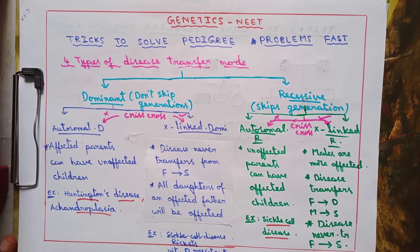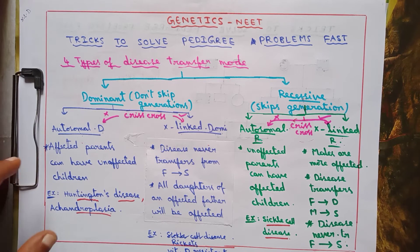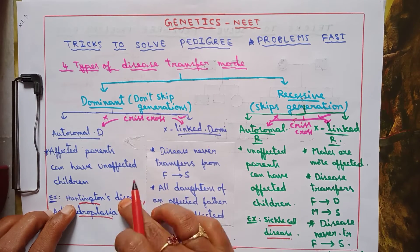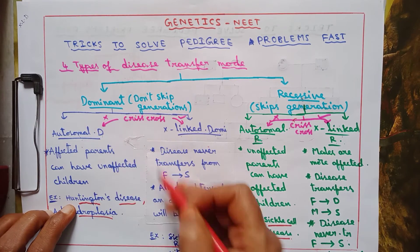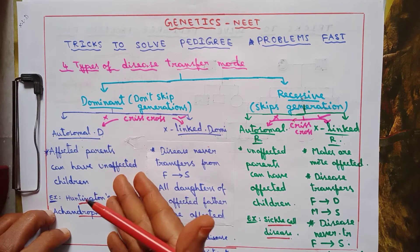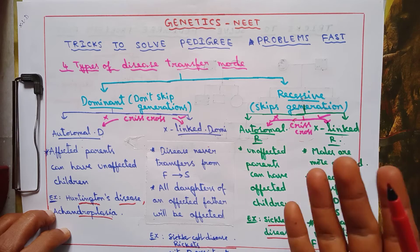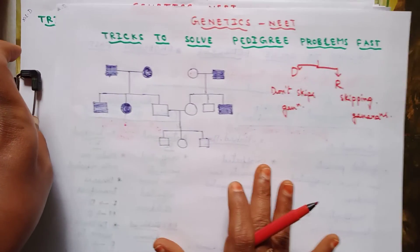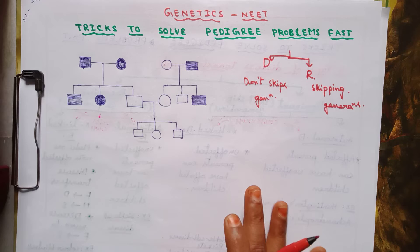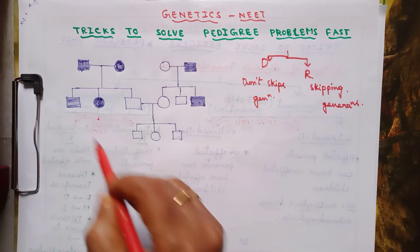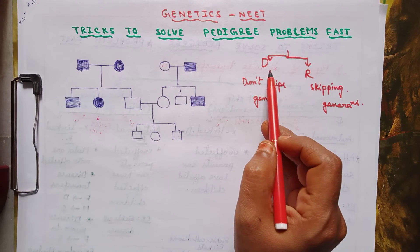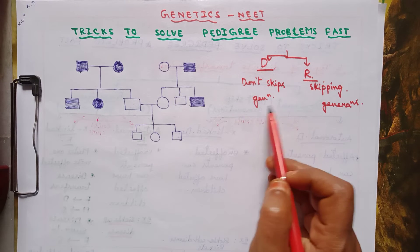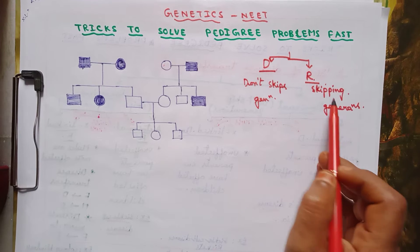Now let's apply these tricks to solve four different pedigree charts — one example for each type: autosomal dominant, x-linked dominant, autosomal recessive, and x-linked recessive. For the first pedigree chart, the first step is to determine whether it is a dominant or recessive trait by checking whether it skips generations.